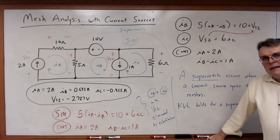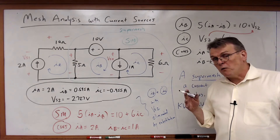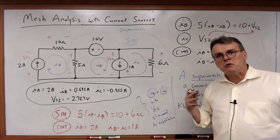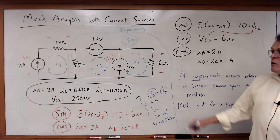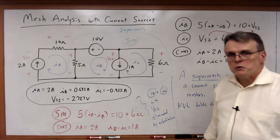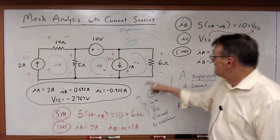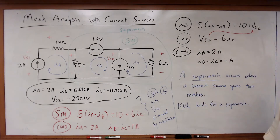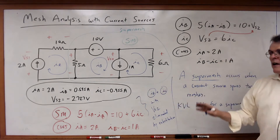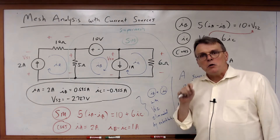A super mesh equation enables us to eliminate the Vs2 variable and write one equation around the entire super mesh, combining the two original mesh equations for Ib and Ic. Now, to emphasize: don't be distracted or fooled by a textbook that tries to make it seem as if you must use a super mesh equation. You don't. You can always solve any mesh analysis problem by defining the voltage across each current source and then writing the KVL equations. I will never ask you to work a problem using super meshes.